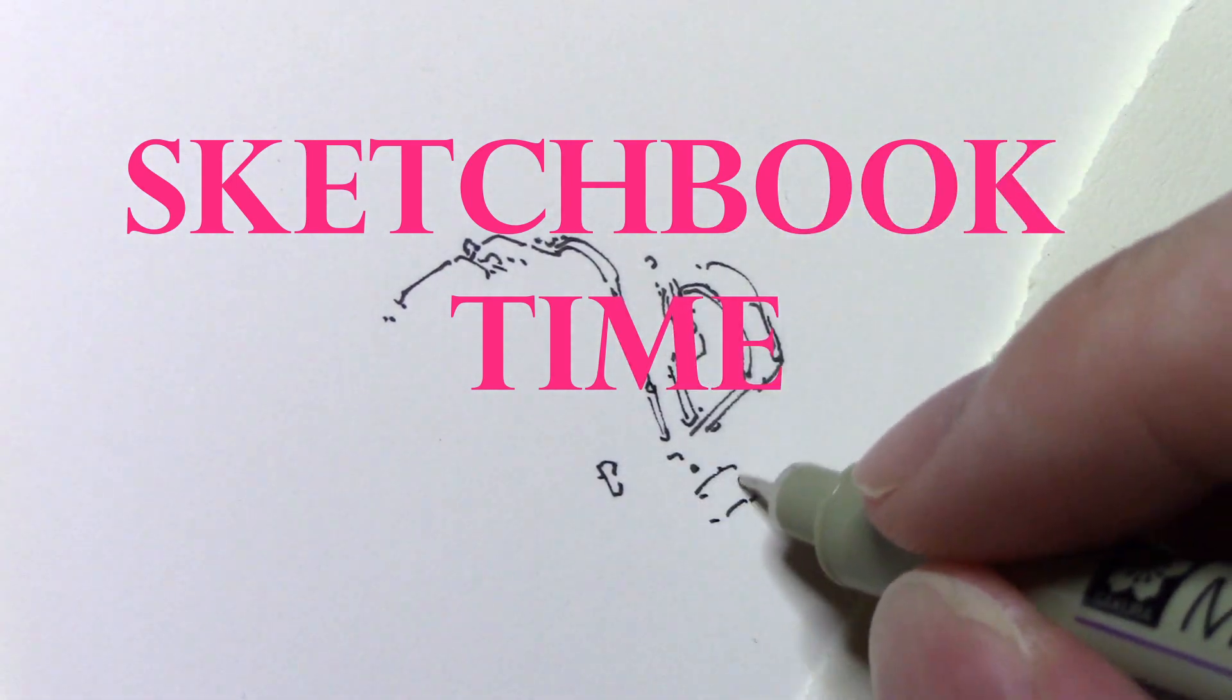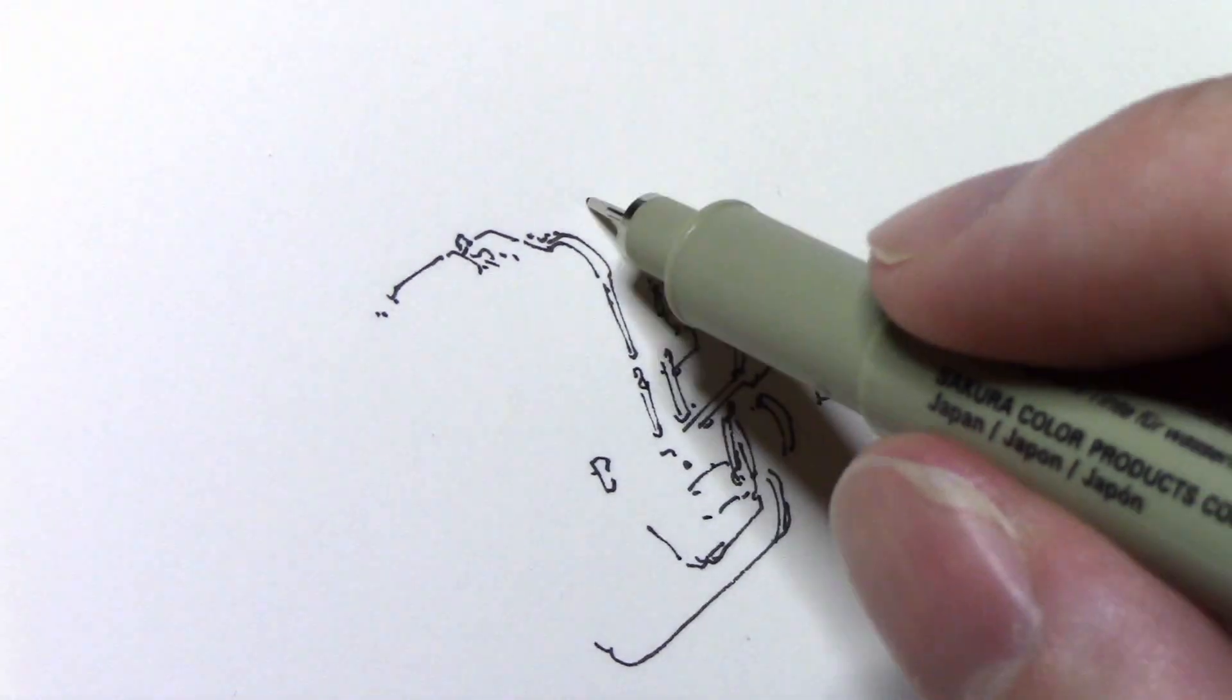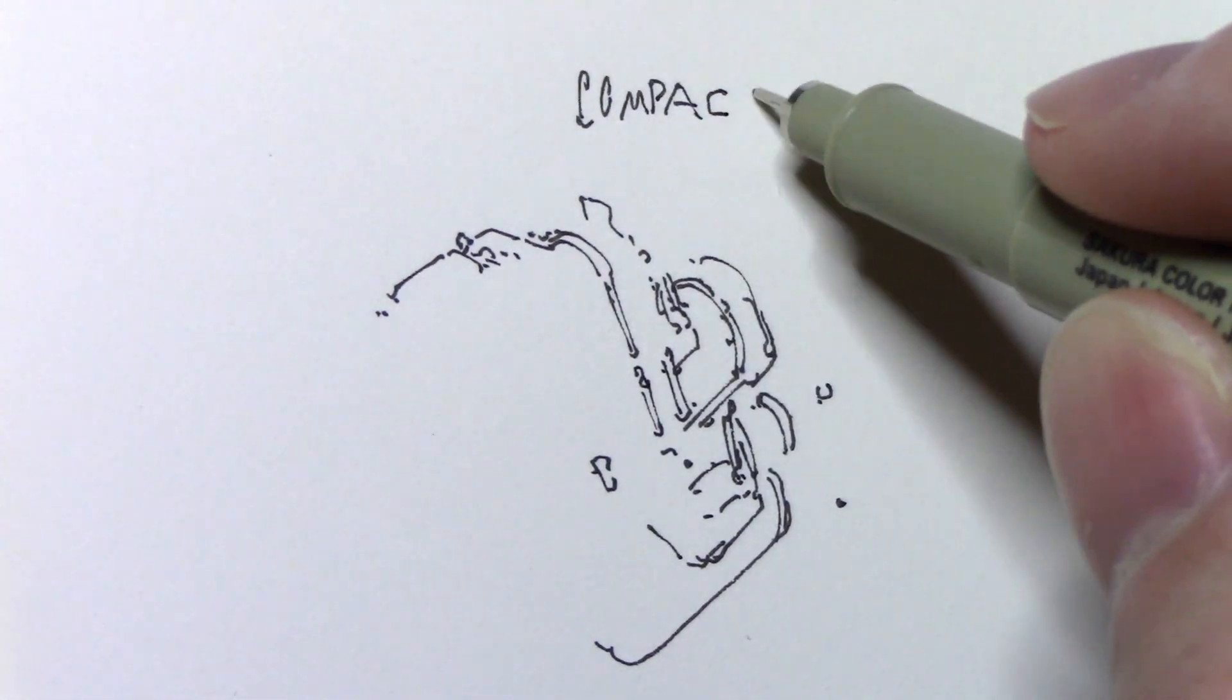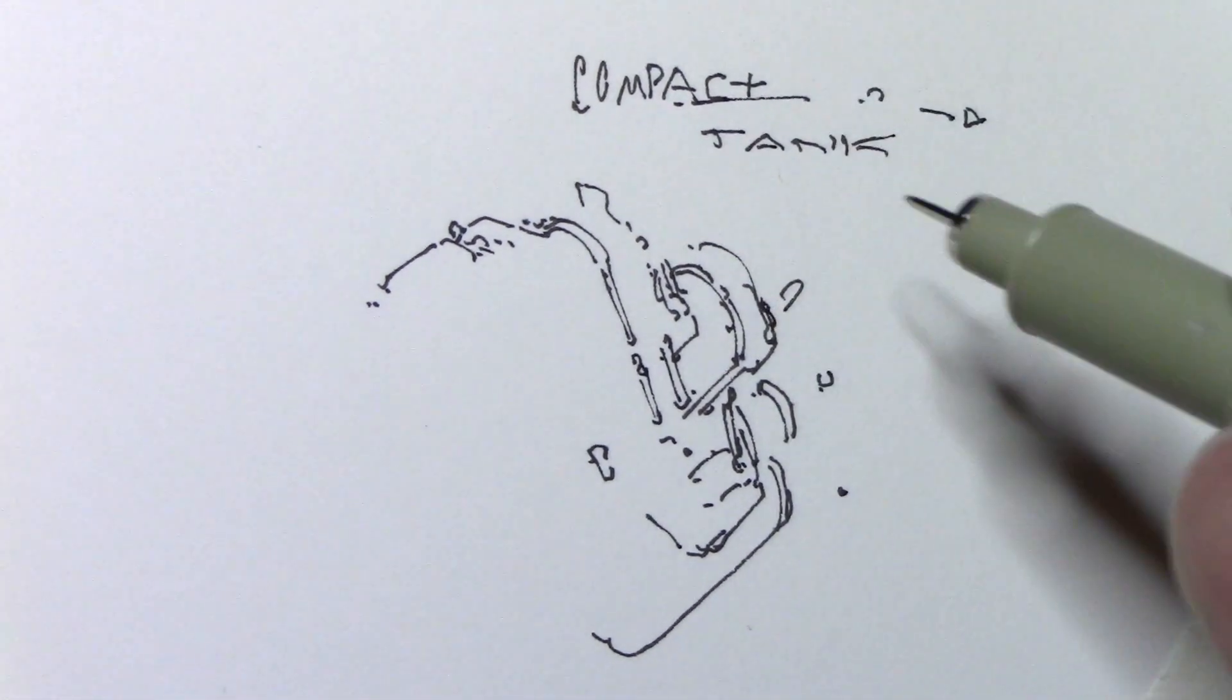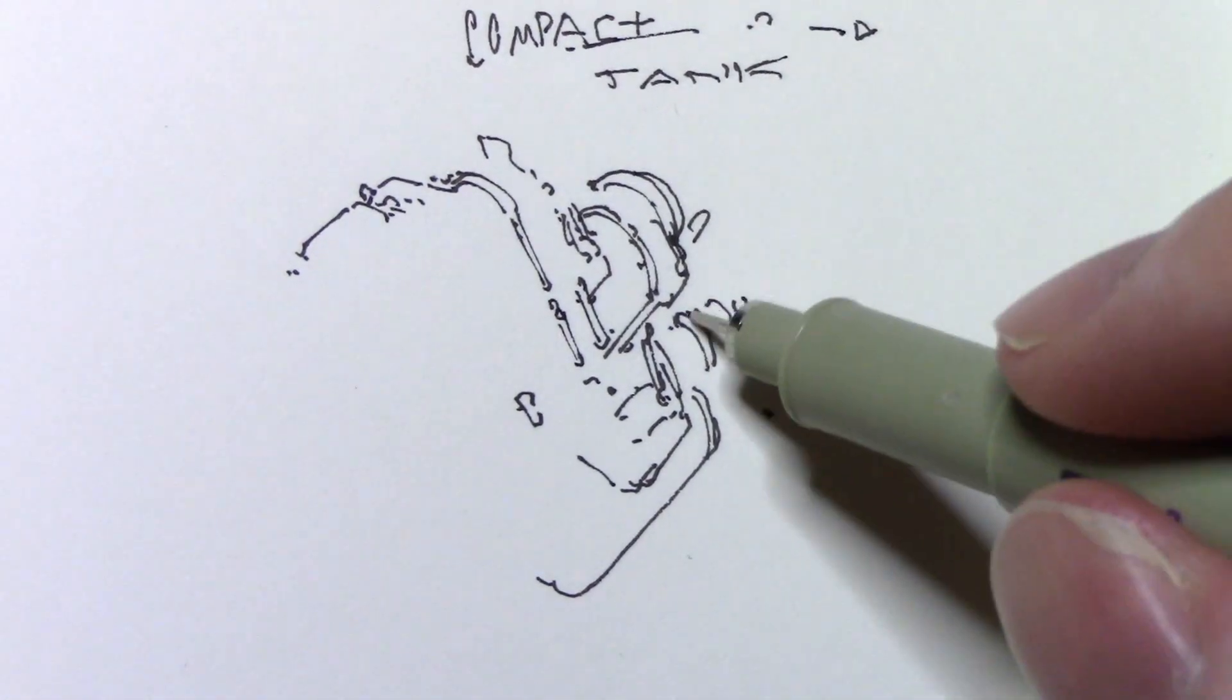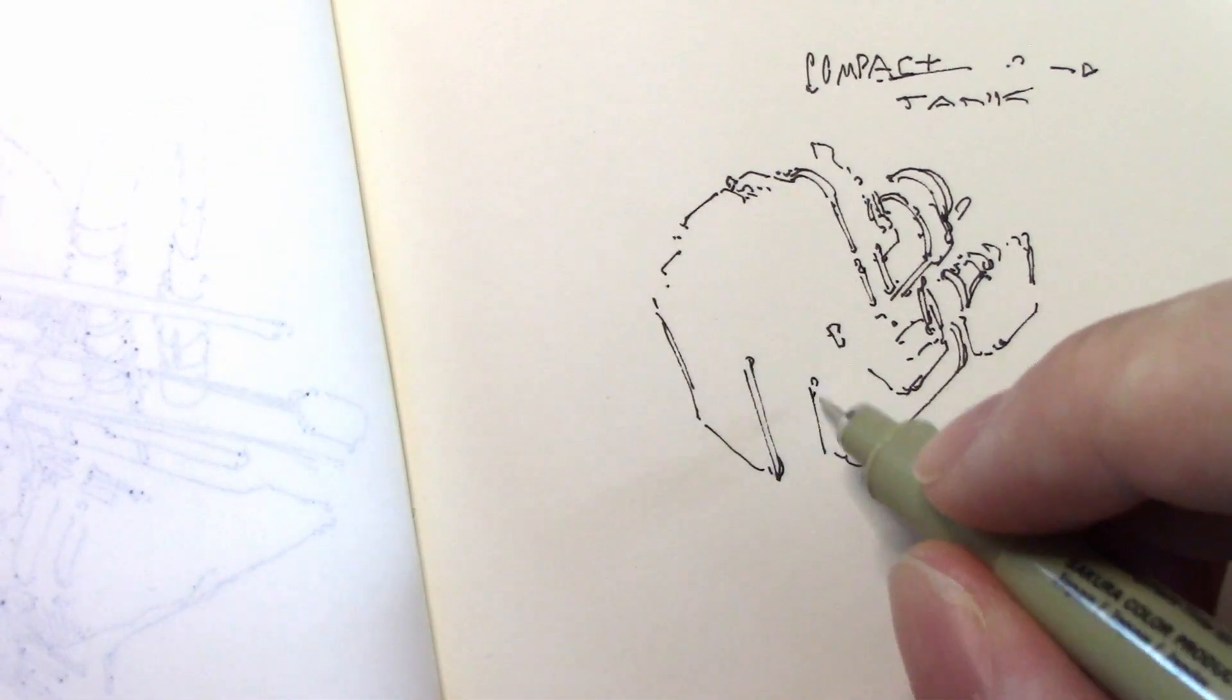So for today I'm going to be drawing in my sketchbook and what I wanted to make was some box tanks, cyberpunk tanks, or I like to call them compact tanks. What that is basically is a box or a rectangle that transforms into a vehicle, specifically a military type vehicle.